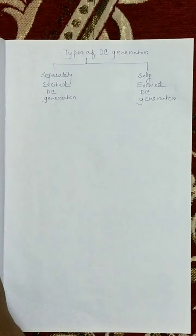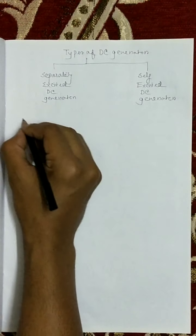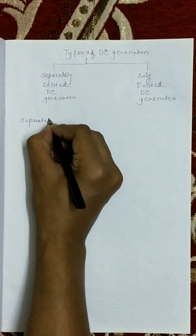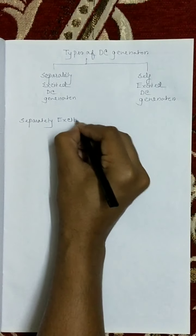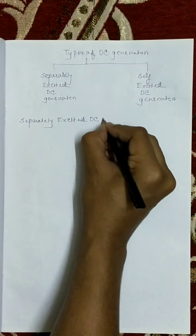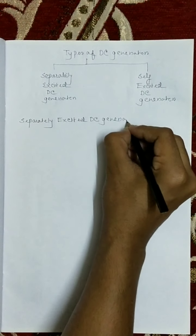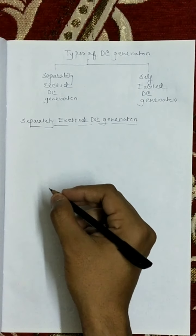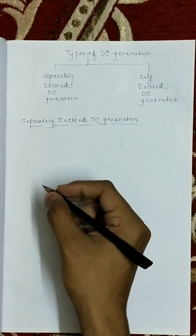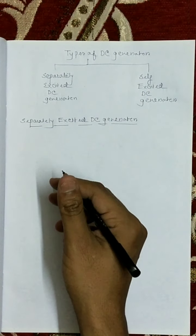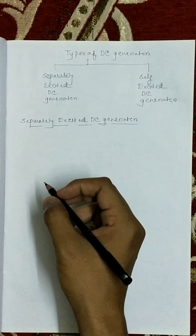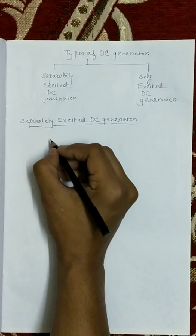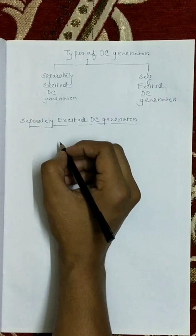First, we will discuss about separately excited DC generator. A DC generator whose field magnet winding is supplied from an independent external DC source is called a separately excited DC generator. I am just sketching the picture diagram of a separately excited DC generator.